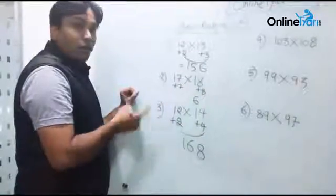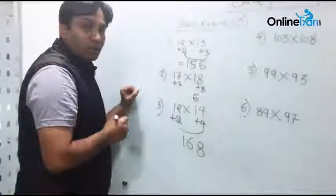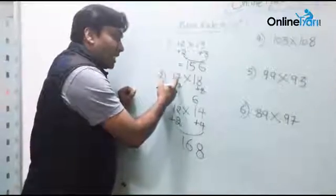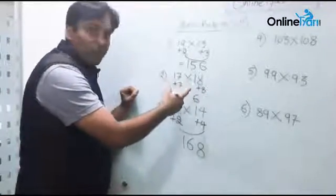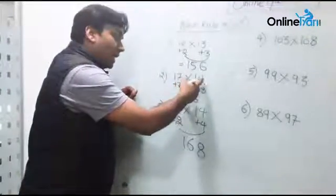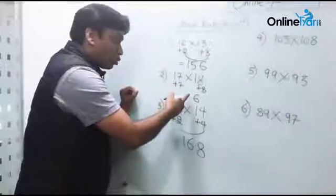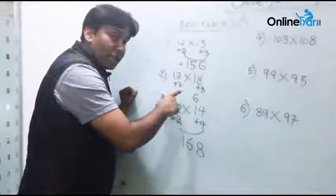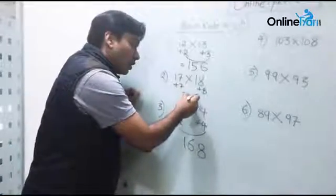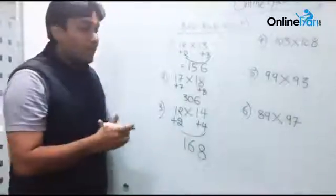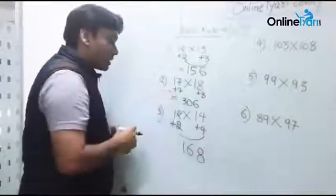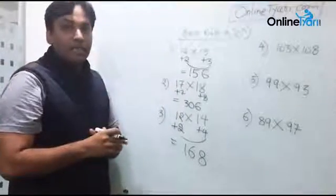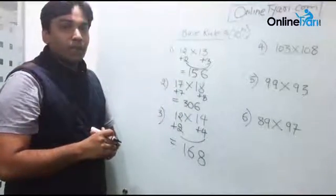And then the second step is do the cross addition. So 17 plus 8 will give you 25. 18 plus 7 will give you 25. Now 25 plus the carry forward which was 5 from the earlier step, that is 30. So here is your answer, that is 306. So 306 is going to be the answer to 17 times 18. I hope you're getting the technique.